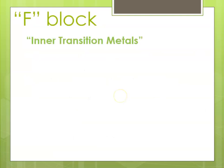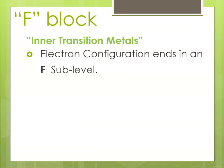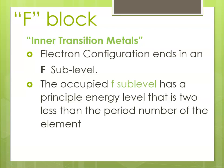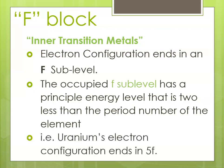Then the F block — the so-called inner transition elements, or inner transition metals — the F sub-level is being filled in, and that F sub-level is going to be 2 less than whatever the row number is. So if you're in row 6 and you're in the F block, the 4f's are filling in, 2 less than the row you're in. For example, uranium in period 7 has 7 minus 2 equals 5, so the 5f's are filling in.